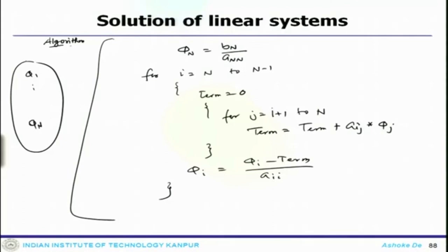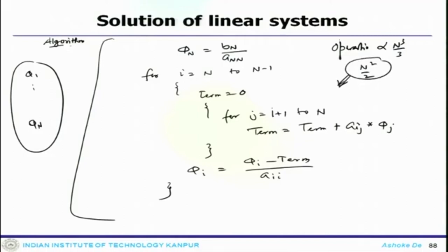This algorithm solves the linear system for an n×n system. The number of operations required is proportional to n³/3, of which n²/2 arithmetic operations are required for the backward substitution. This high computational cost limits the applicability of this direct approach for large-scale problems.